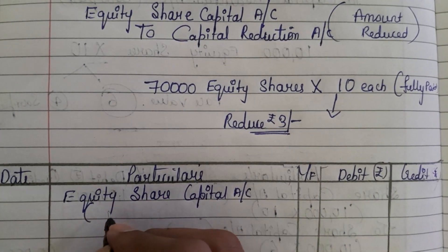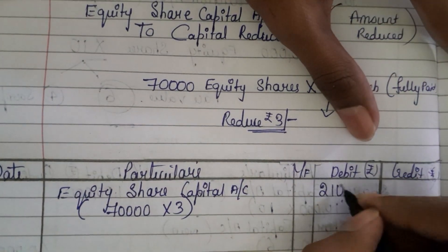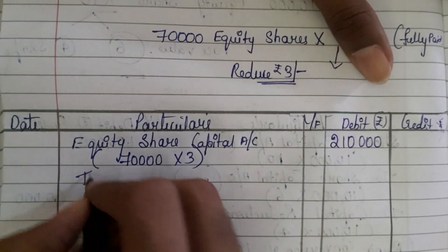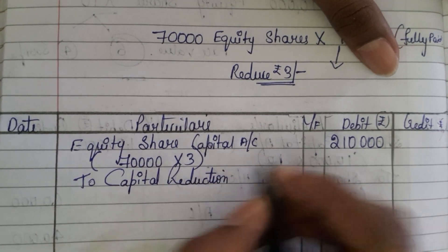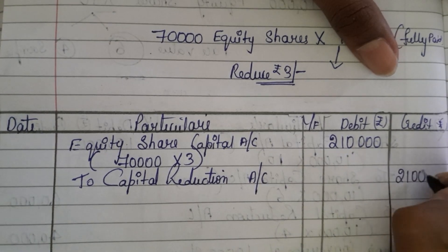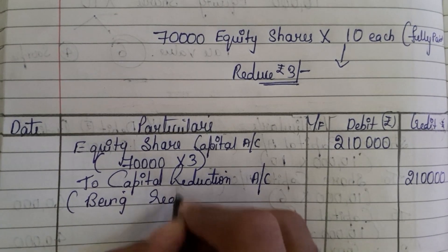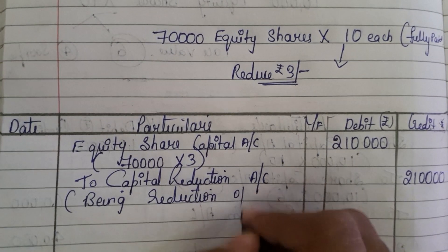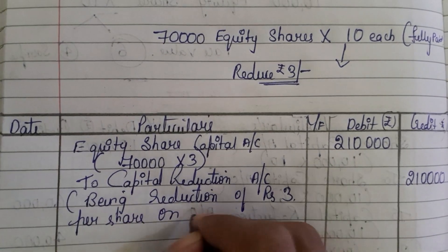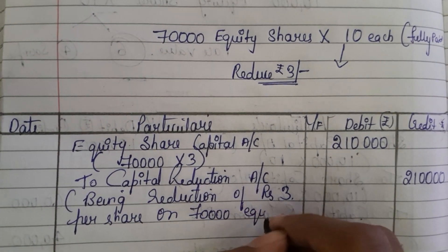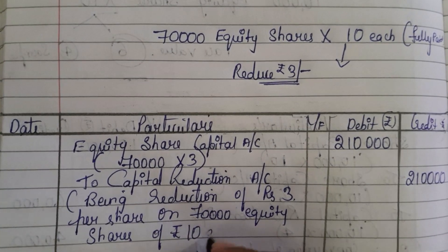So how much they are reducing? Total 70,000 equity shares multiplied by rupees 3 equals rupees 2,10,000 — to Capital Reduction Account, same rupees 2,10,000. The narration will be: 'Being reduction of rupees 3 per share on 70,000 equity shares of rupees 10 each.'